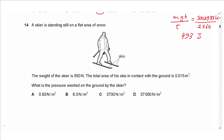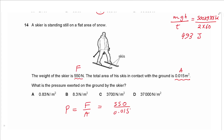Question 14: A skier standing still on snow has a weight of 550 N. The total area of skis in contact with the ground is 0.015 m². Pressure = force ÷ area = 550 ÷ 0.015 ≈ 36,667 N/m², which approximates to 37,000 Pa.